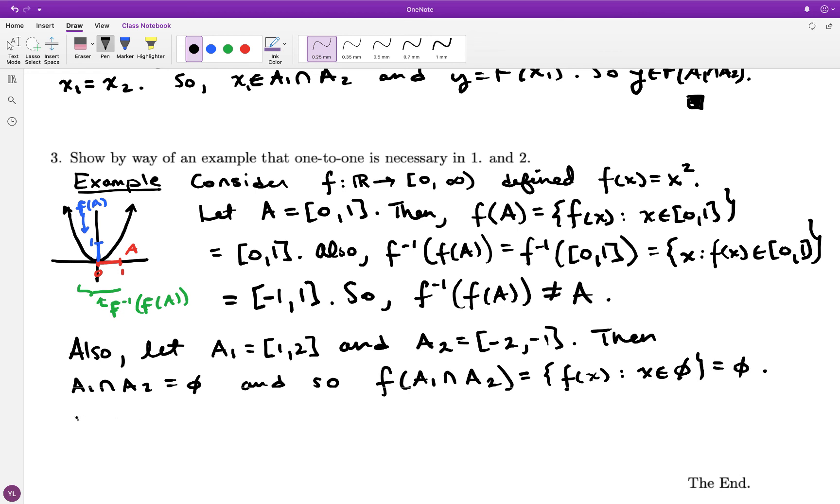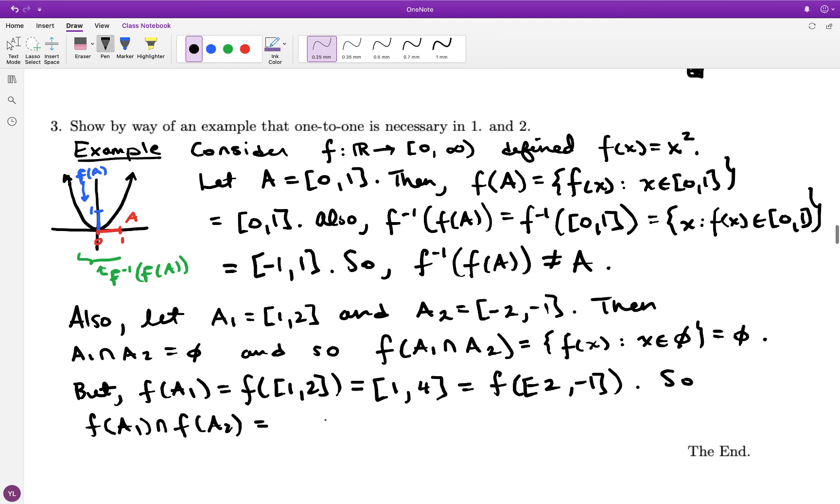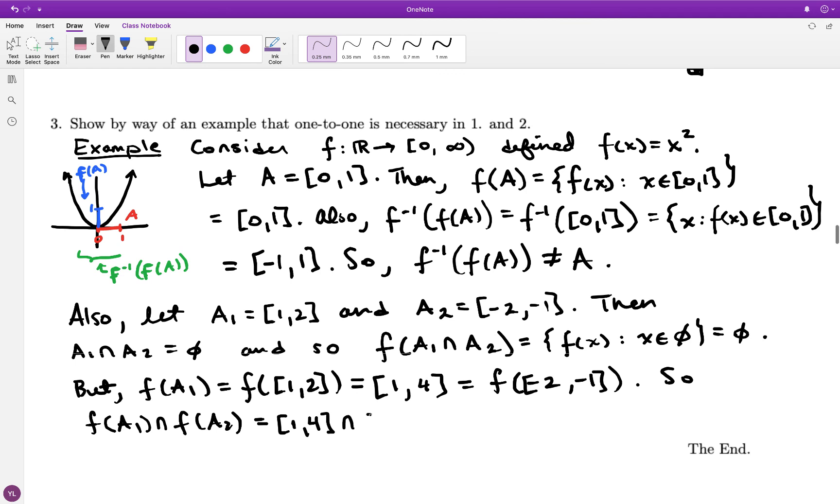If you write it out you see that. But if you sort of take the image of these two sets separately, so f(A1) is the interval from one to four, and f(A2) happens to be the same thing all the way from one to four. So the intersection of their individual images happens to be the interval from one to four, not the empty set. So again with this non one to one function I have found some sets A1 and A2 that violate the property that was proven for one to one functions in number two.